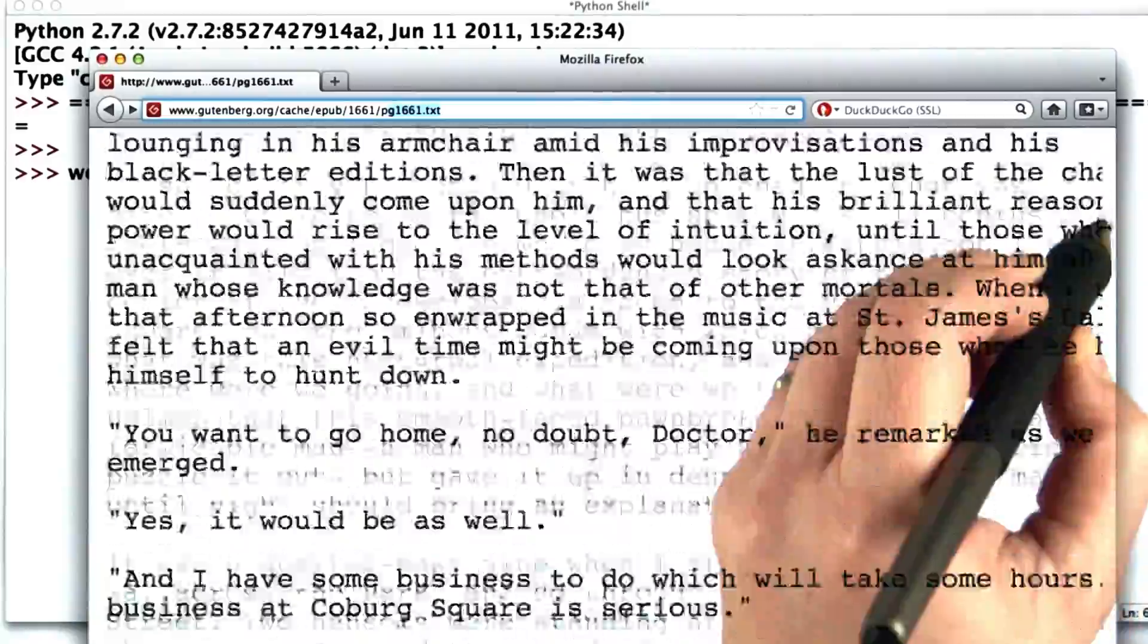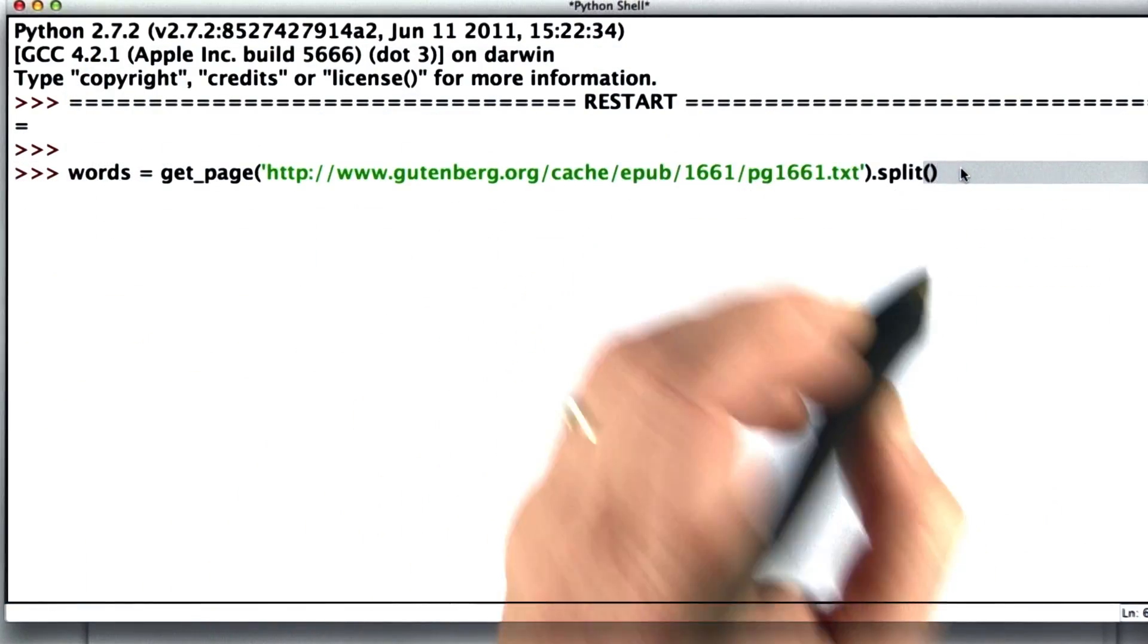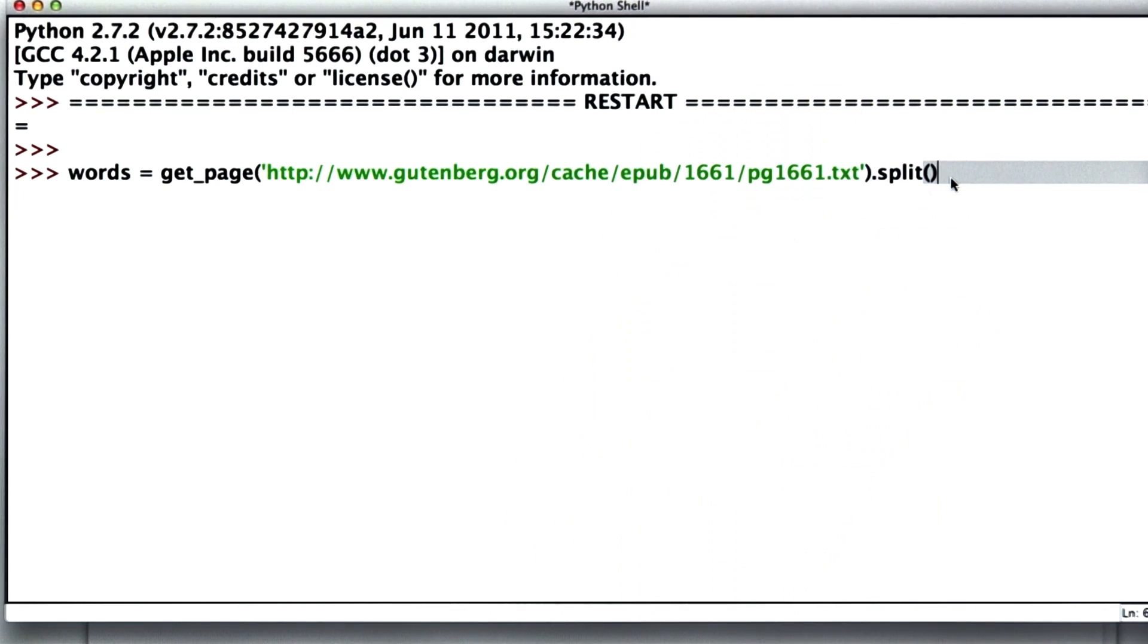So we're going to get all the words on this page using get_page. We're going to split them into words like we were doing in the crawler. And we'll store that in the variable words. And the length of that is over 100,000 words. Now they're not all unique, so the number of entries in our hash table will be smaller than that. But let's see how the distribution is for those words.